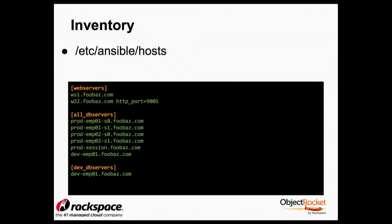So this is just an example of your inventory. This is a static inventory — it's just a text file in INI format. It talks about web servers at the top. Maybe you're managing web servers or proxy servers, as well as database servers. And then below that, it says all DB servers.